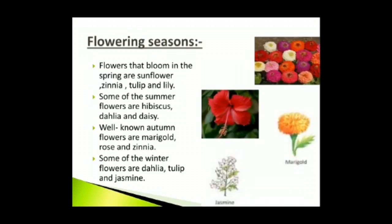Flowering season: Flowers do not bloom in all seasons. Some flowers are seasonal. Flowers that bloom in spring are sunflower, zinnia, tulip and lily. Some summer flowers are hibiscus, dahlia and daisy. Well-known autumn flowers are marigold, rose and zinnia. Some winter flowers are dahlia, tulip and jasmine.